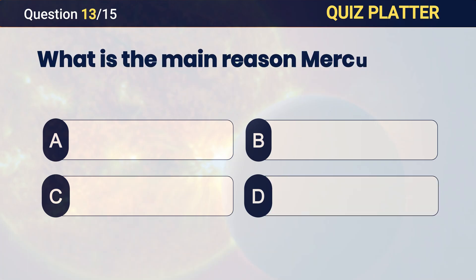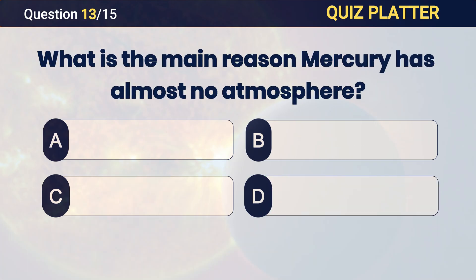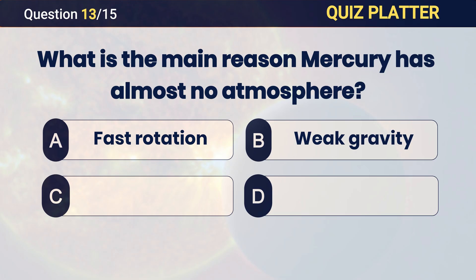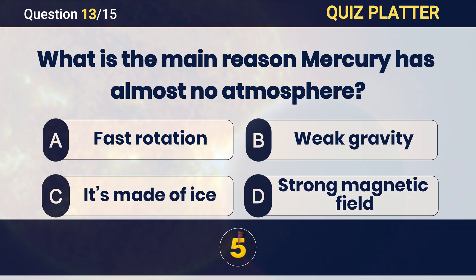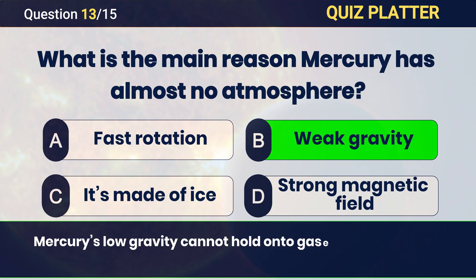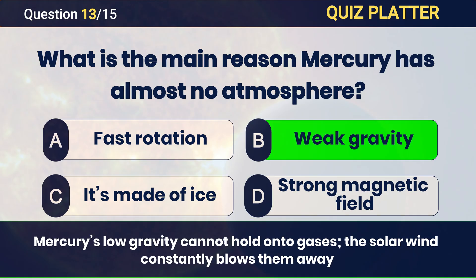What is the main reason Mercury has almost no atmosphere? Answer: B — weak gravity.